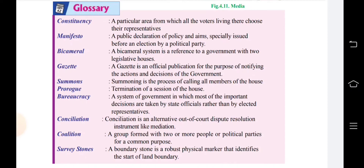A gazette is an official publication for the purpose of notifying the actions and decisions of the government. Prorogue means termination of a session of the house. Bureaucracy means a government that is administered primarily by authorities staffed with non-elected officials. Conciliation is an alternative, out-of-court dispute resolution instrument, like mediation.